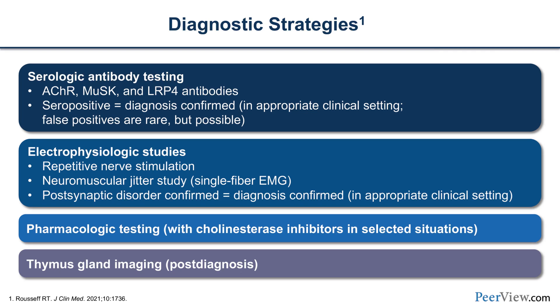First and foremost, it's a clinical disease that we identify through the history and a good neuromuscular examination. The variability of the lid or the muscles of eye movement are very characteristic, and there's really no other disease that will do this. We can confirm our clinical impressions with serologic testing for antibodies to AChR, MuSK, or LRP4, and in seropositive patients this diagnosis is confirmed in the appropriate clinical setting. There are rare false positives to AChR antibody, but they are quite uncommon.